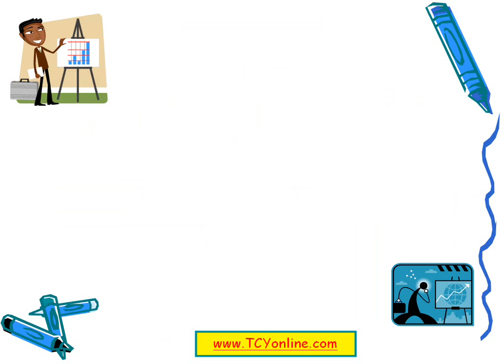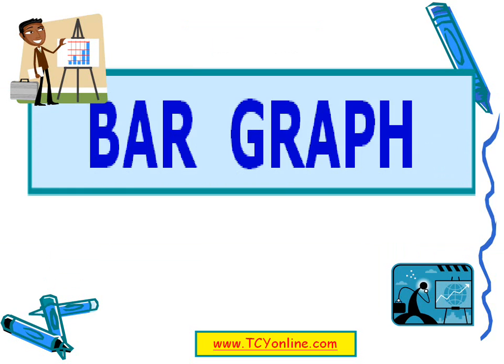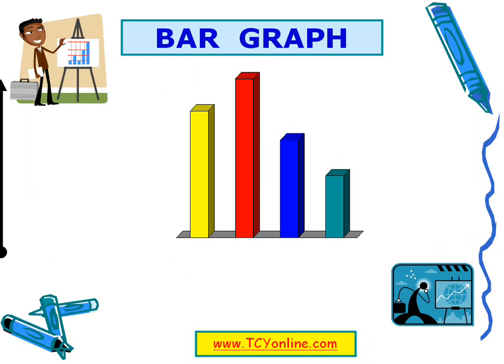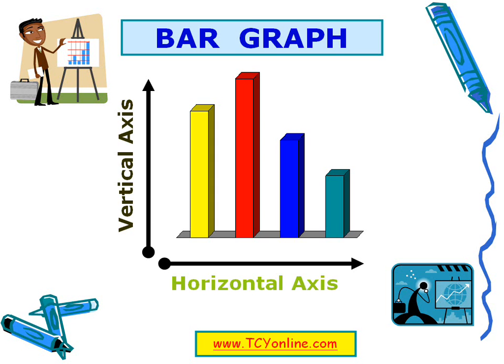Now let's look at the different axes of a bar graph. In this bar graph, this is the vertical axis, while this is the horizontal axis. Different numbers are represented along these horizontal and vertical axes.